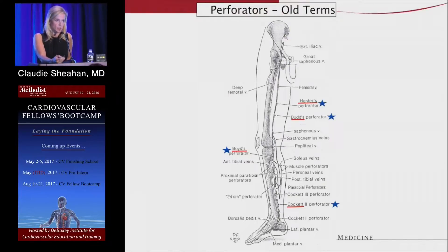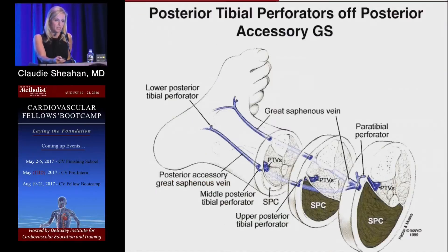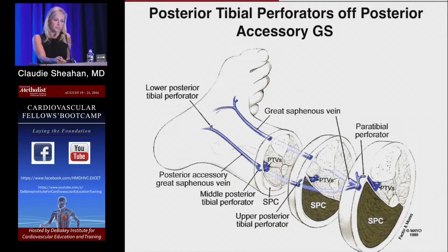In anatomic textbooks, you'll see many perforator veins — the Cockett perforators, Boyd's perforators — but those terms are no longer used, thanks to the new classification system. Now they are clustered intuitively: anterior thigh perforators, posterior medial thigh, femoral canal, paratibial, posterior tibial, and medial ankle — classified simply by their location on the leg. It's also worth noting that perforators in the lower leg, when you're trying to treat an ulcer by ablating a perforator, are usually not coming off the great saphenous itself but rather off an accessory branch called the posterior accessory great saphenous vein. If you don't understand this anatomy and don't look for that specific branch, you'll think you're looking at the saphenous vein when you're actually looking at an accessory — which is important for treatment.